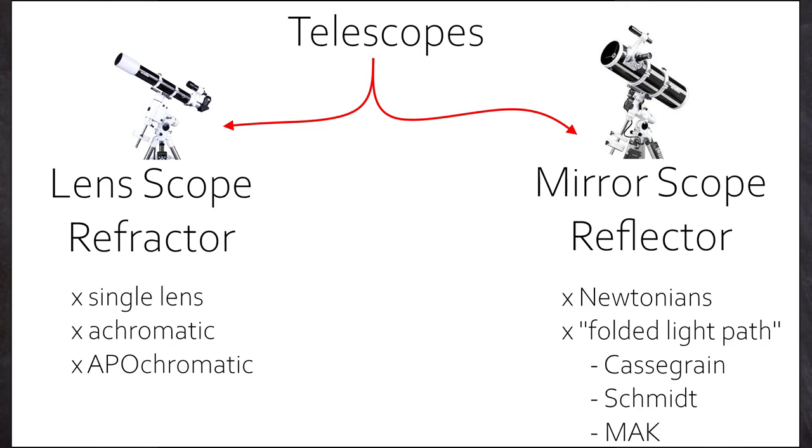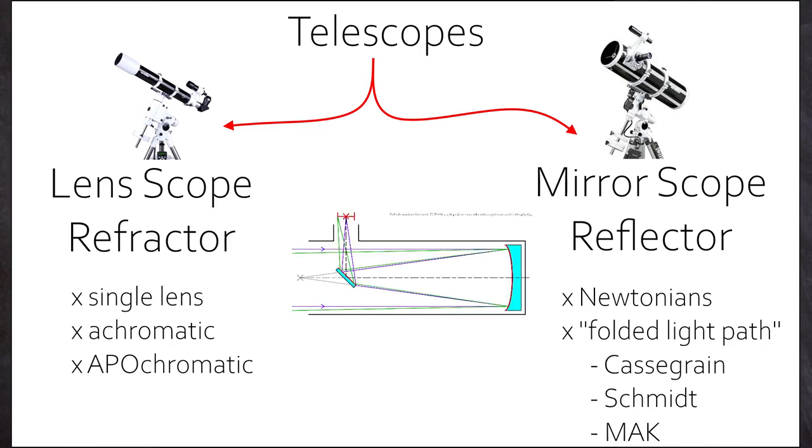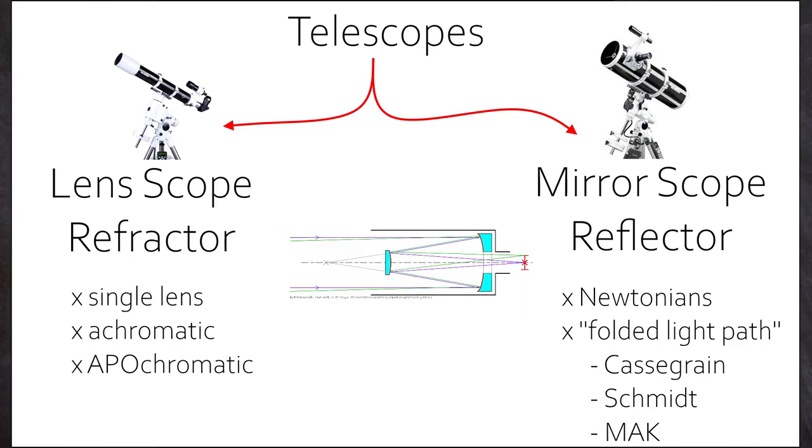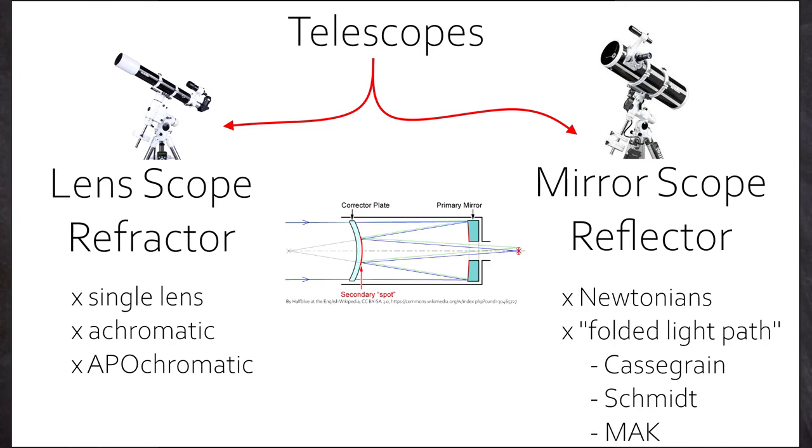The scopes with a main mirror, called reflectors. Newtons tend to be the most popular design, the Cassegrain and others fold the light path to shorten the tube. Additional lens covers try to correct for coma aberrations at the image edges.